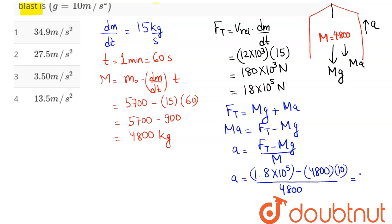This on simplification comes out to be 27.5 meter per second square which is option number 2. We can say the correct answer is option 2. 2 is our answer.